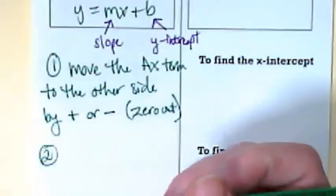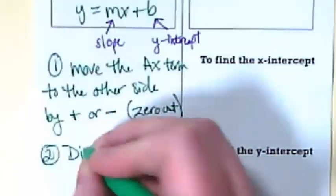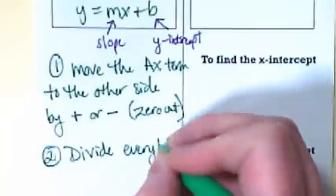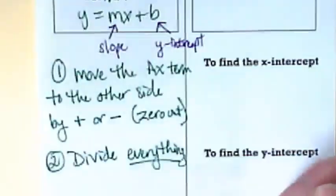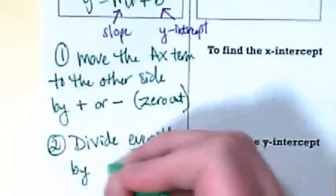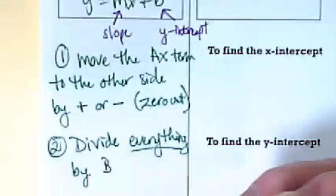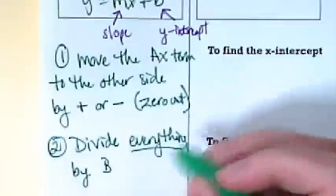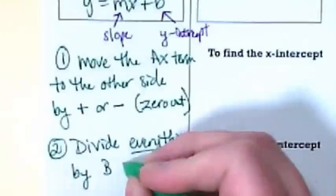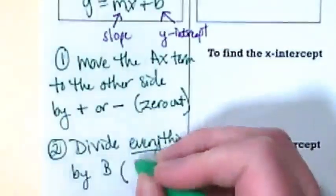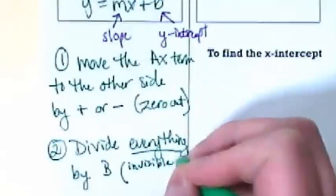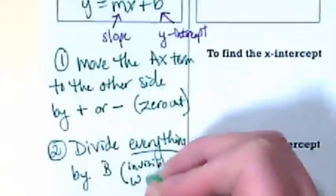Step two. We're going to divide everything, and I want you to underline that everything, by b. Whatever the number is, it's in the b place, we're going to divide everything by it as our step two. And in doing this, we are going to get an invisible one with the y.